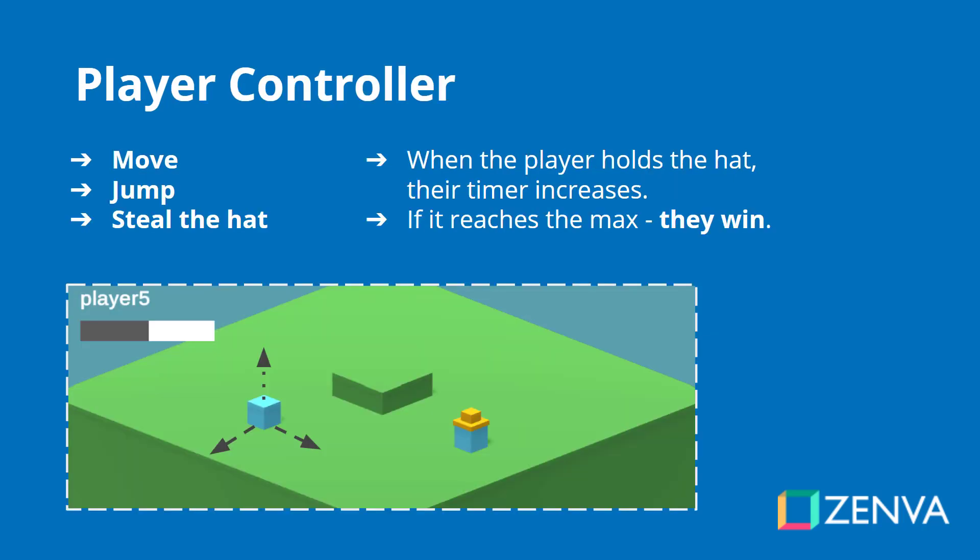We'll also be working on a player controller. This player controller will be able to move, jump and steal the hat from other players. When they hold on to the hat, their timer will increase, and if that timer reaches the maximum amount of time needed, then they will win the game. All of this will also be done through networking, so we'll be syncing the movement, the jumping, the stealing of the hat through the network so that it appears on all other players' screens at the same time.